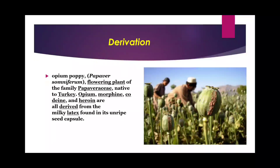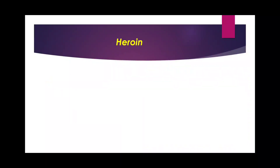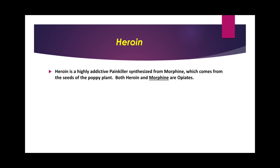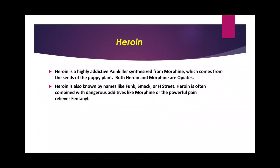The content inside this fruit is used for making these drugs. The most common abused drug among them is heroin. Heroin is a highly addictive painkiller synthesized from morphine, which comes from the seed of the poppy plant, Papaver somniferum. Both heroin and morphine are opioids. Heroin is also known by street names such as funk, smack, and head.